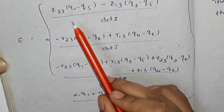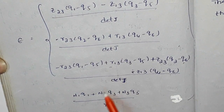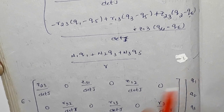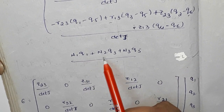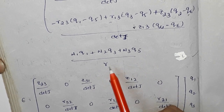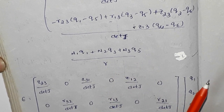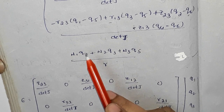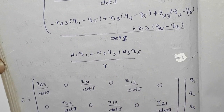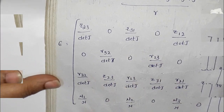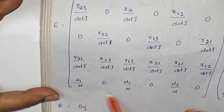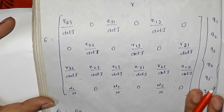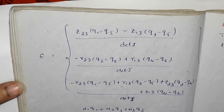Substituting all values, the hoop strain formula is εθ = U/R = (N1·Q1 + N2·Q3 + N3·Q5)/R. This introduces an extra row in the B matrix compared to CST. We separate the displacements Q1, Q2, Q3, Q4, Q5, Q6 and assemble the strain displacement matrix B. This is the final strain displacement relation for axisymmetric elements. Please like, share, and subscribe. Thank you.